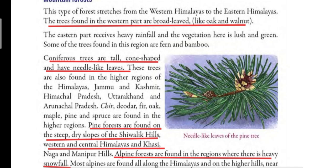Coniferous trees are found in the higher areas of the Himalayas and in the states of Jammu and Kashmir, Himachal Pradesh, Uttarakhand, and Arunachal Pradesh. The examples of coniferous trees are cheer, deodar, fir, oak, maple, pine, and spruce.